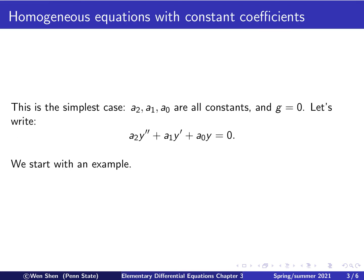Let's begin with the simplest case of second-order linear equation — homogeneous equations with constant coefficients. Constant coefficient means that a2, a1, a0 are not functions of t, but are just constants, and the right-hand side is zero. So we are interested in: a2·y'' + a1·y' + a0·y = 0.